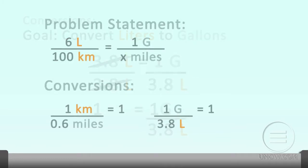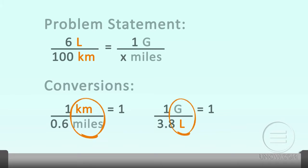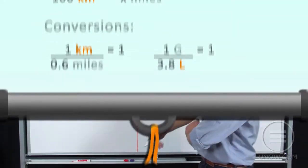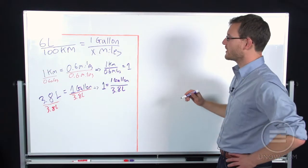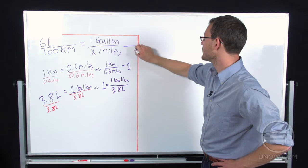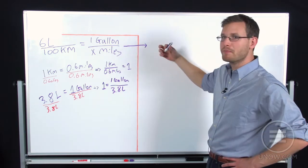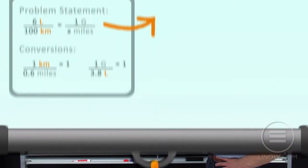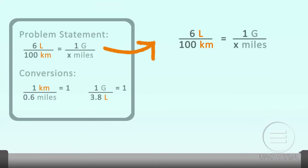Great. So now we have a problem statement and then we have two conversions. And we notice that if we could convert the kilometers to miles and the liters to gallons, all the units would be perfect. So let's go ahead and do that. So I'm going to employ this trick where I'm going to take my problem statement, here it is breaking out of the box, and I'm going to multiply both sides by 1. So I have 6 liters per 100 kilometers times 1 equals 1 gallon per x miles, again, times 1.